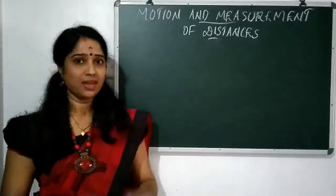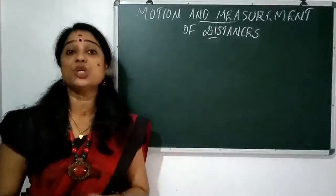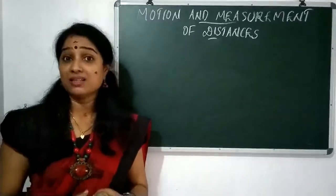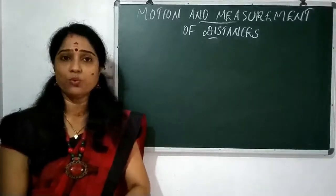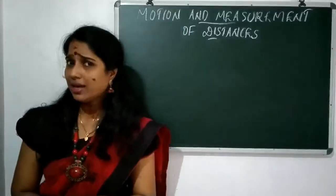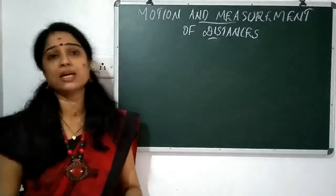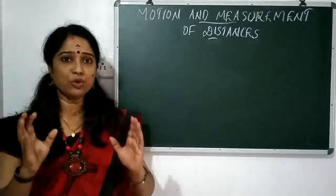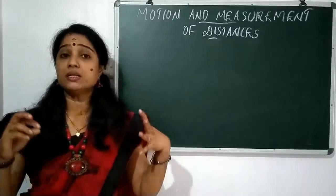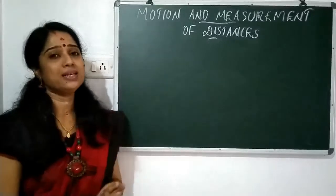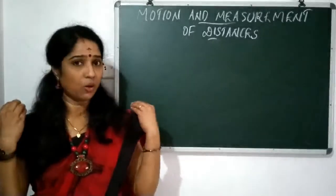Good morning, dear children. In the last two classes we discussed about measurement — a unit for measuring time, mass, distance, and temperature. You are also familiar with different units for measuring distance: millimeter, centimeter, meter, and kilometer. You also know the rules that should be followed while writing SI units — four rules which you are already familiar with.